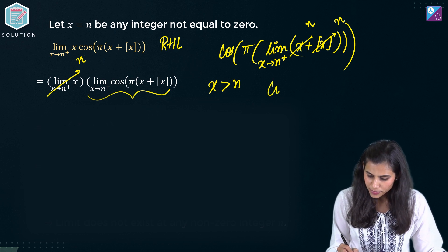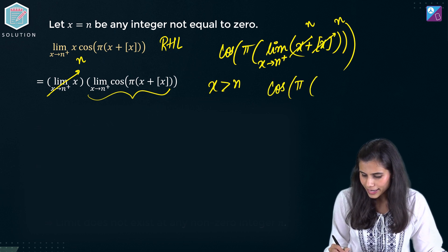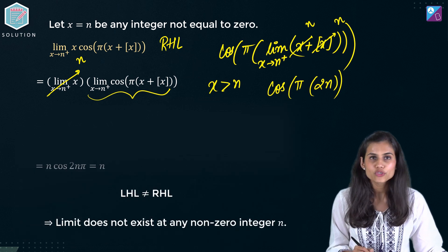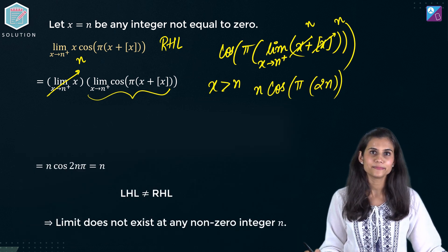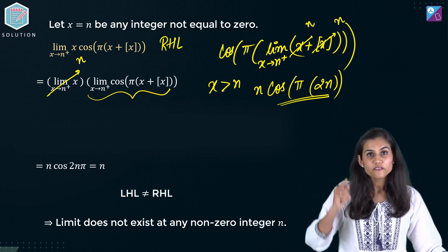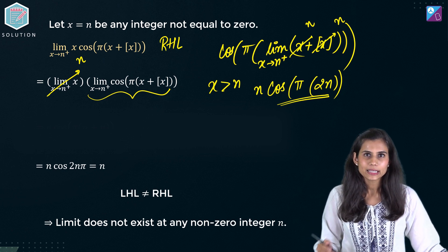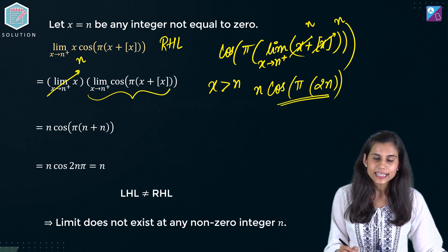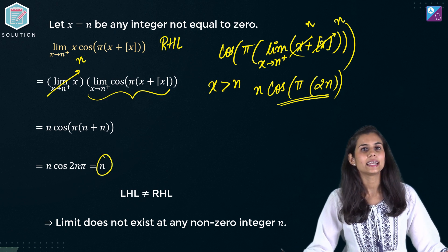What are you left with? Cos of pi of n plus n that is 2n and you already had an n. Cos of even integral multiples of pi comes out to be 1. 1 into n gives you n as the right hand limit.